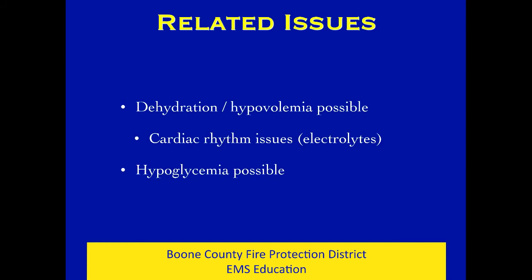Related issues: if your patient has gone through heat exhaustion into heat stroke, there would almost certainly be dehydration and possibly hypovolemic shock. In some cases this will also involve the loss of important electrolytes — potassium, magnesium, calcium, sodium — all of which are in play in terms of cardiac rhythms. These patients can lose enough important electrolytes to get into cardiac rhythm problems. At the EMT level you can't do much about that, but at the paramedic level there would be 12-lead ECGs and possibly electrolyte replacement.